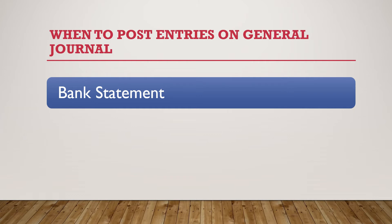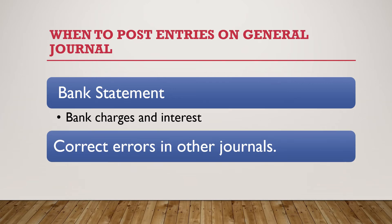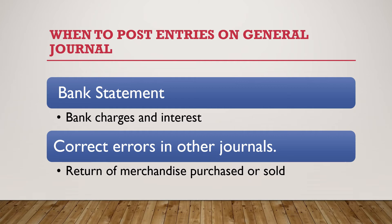So when do you post entries on general journals? Things like bank statements — the ones that deal with bank charges and interest. This kind of entries do not have specific journals, so you have to put them in general journals. We also have correction of errors in other journals, so if you made a mistake you have to do some sort of general journal entries before you really fix the problem, and return of merchandise purchases as well.